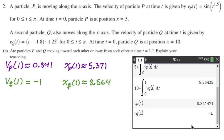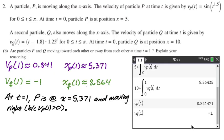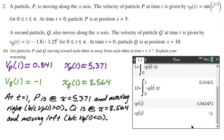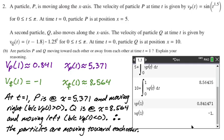We got to write that up. So let's see, I'm going to say at t equals one, P is at x equals 5.371 and moving to the right. And then I give a reason because velocity is greater than zero. Also Q is at 8.564 and moving to the left because the velocity is less than zero. So you're at five moving to the right. The other one's at eight moving to the left. They're definitely moving toward each other. If you need to draw that on a number line and make sure that you definitely understand it, but the particles are in fact moving toward each other. And so that would be my answer.